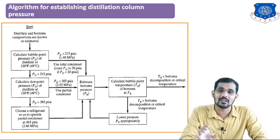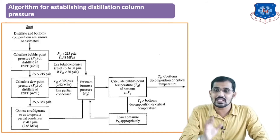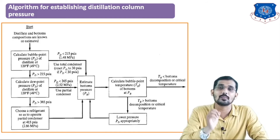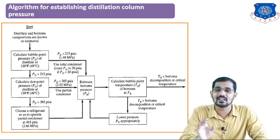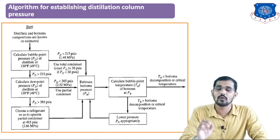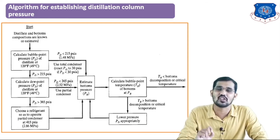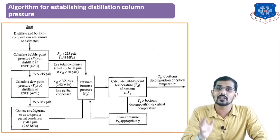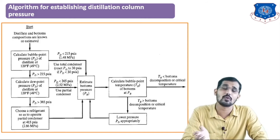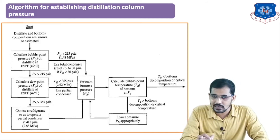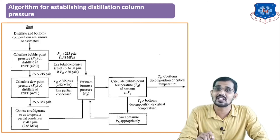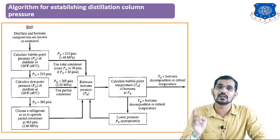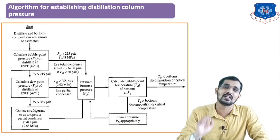After calculating the bubble point pressure Pd, you check the Pd value. If Pd is less than 215 psi, you go to the next step — estimation of the bottom pressure. If Pd is greater than 215 psi, you proceed to calculate the dew point pressure. The dew point is the temperature at which your vapor starts condensing and forms liquid, and the corresponding pressure is the dew point pressure.